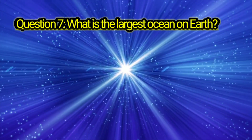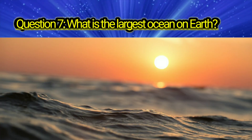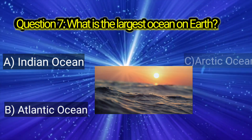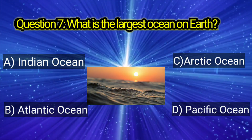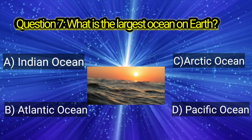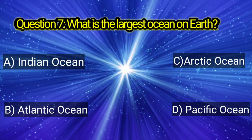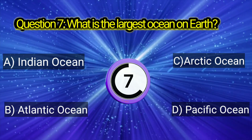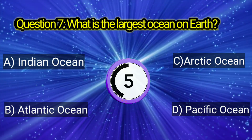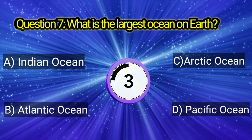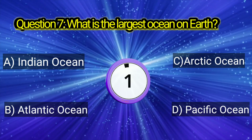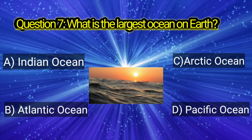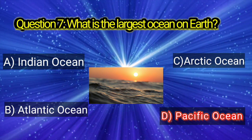Question 7. What is the largest ocean on Earth? A. Indian Ocean, B. Atlantic Ocean, C. Arctic Ocean, D. Pacific Ocean. You have only 10 seconds to think. Your time is starting now. Okay, friends, your time is up. The right answer is D. Pacific Ocean.